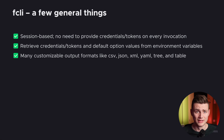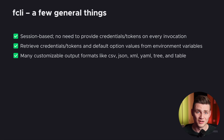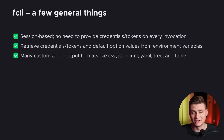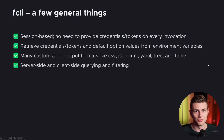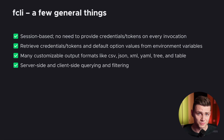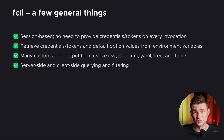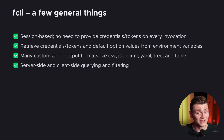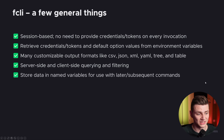The next thing is regarding output formats. As I said in the first video, there are a ton of options when it comes to outputting data with fcli. We can do CSV, JSON, XML, YAML, tree, and table. We can also filter or query this data — first we try to do it on the server side if possible, but if not, we can also do it on the client side.